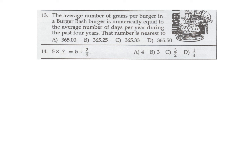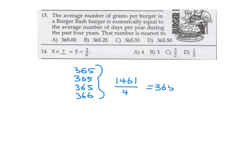The average number of grams per burger is numerically equal to the average number of days per year over the past four years. In a four-year period you have three years of 365 days and one leap year of 366. Adding gives 1461, divided by 4 equals 365.25. That is B.